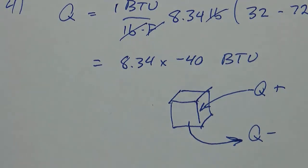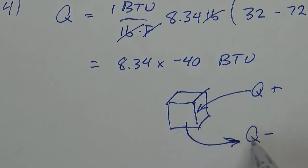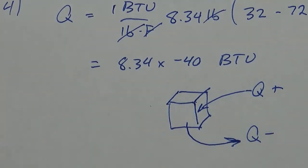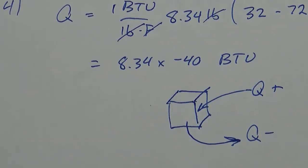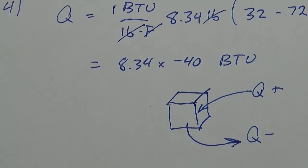So when you answer number four in Canvas, use a positive number, but we know that in fact we're taking heat out because of the way the problem is. Alright, you should get a number around 333.6 for that. That's the end of this problem.